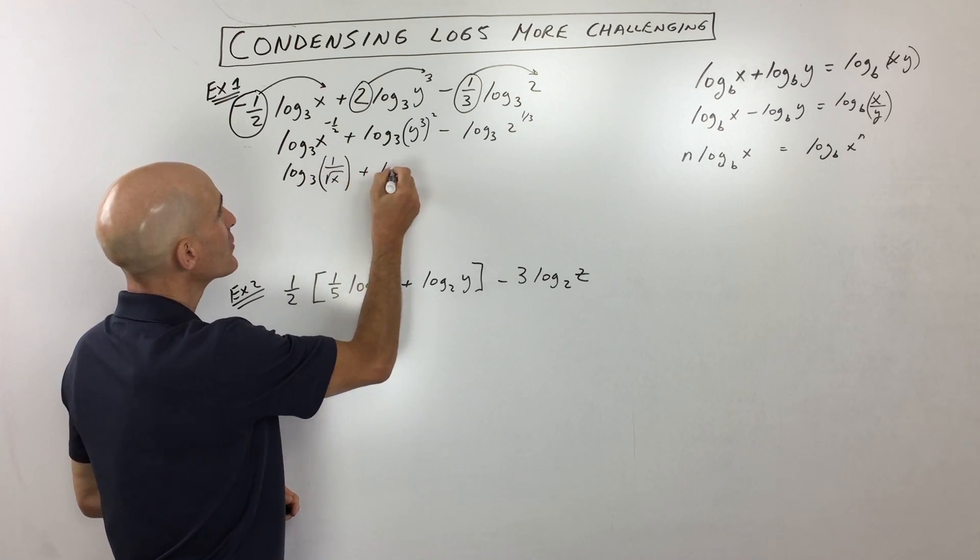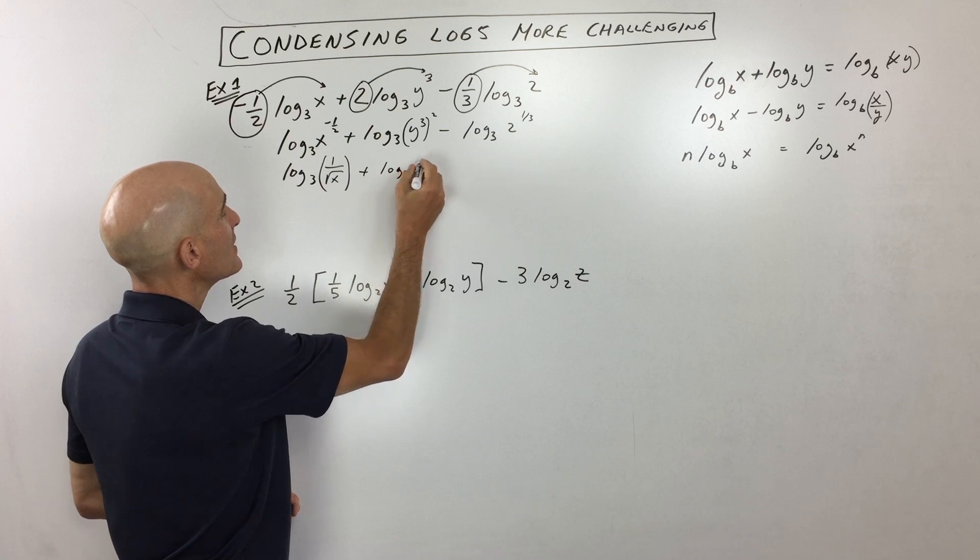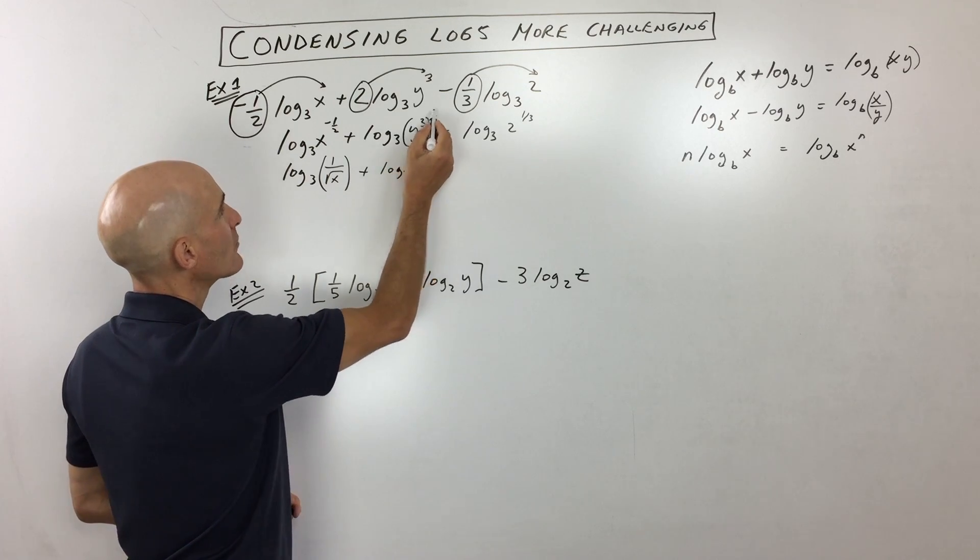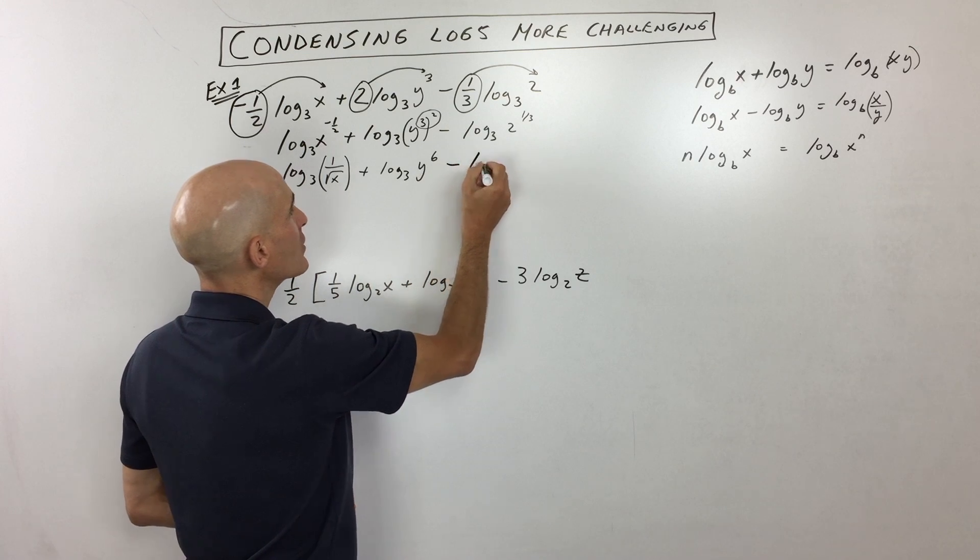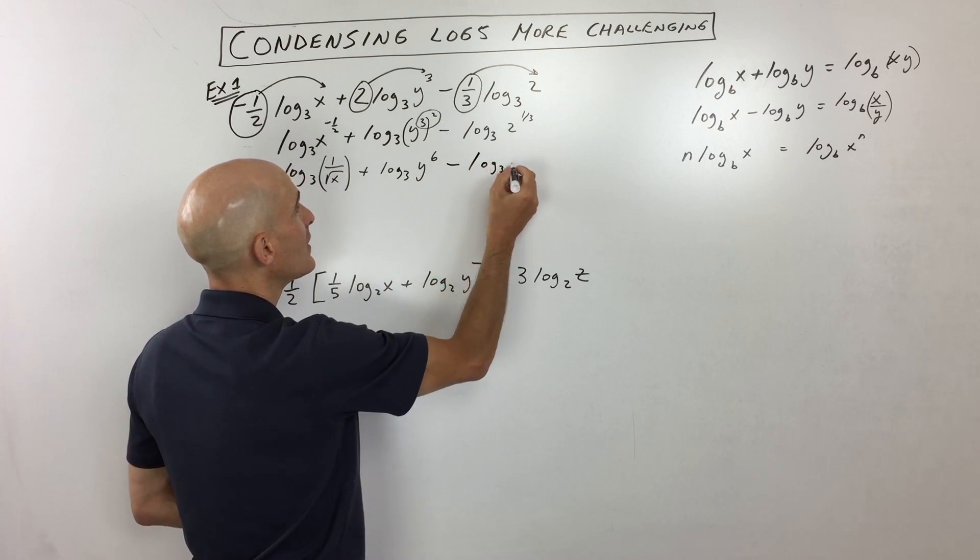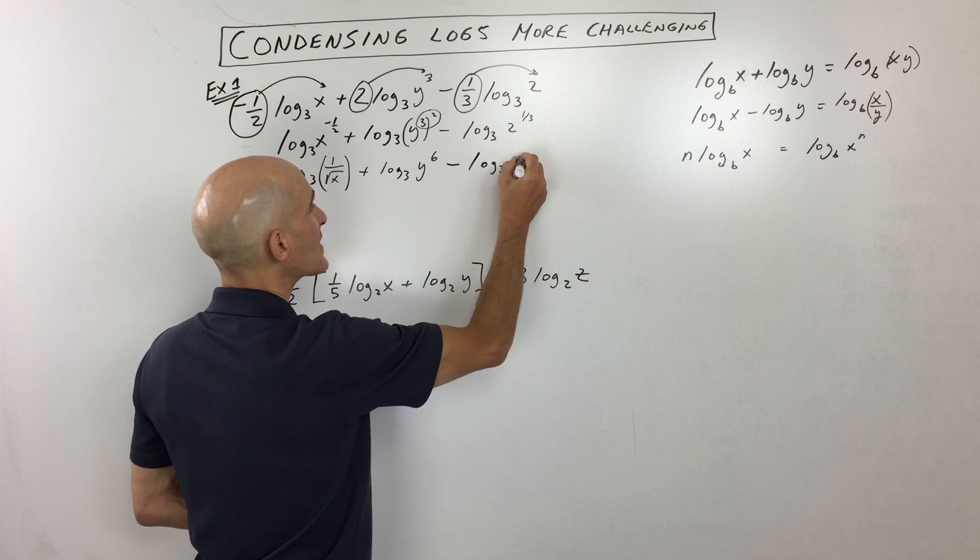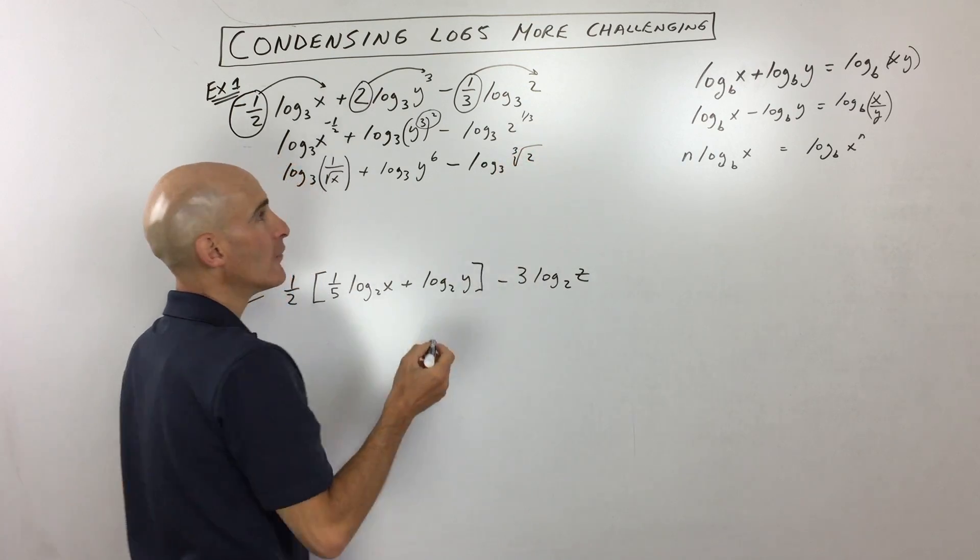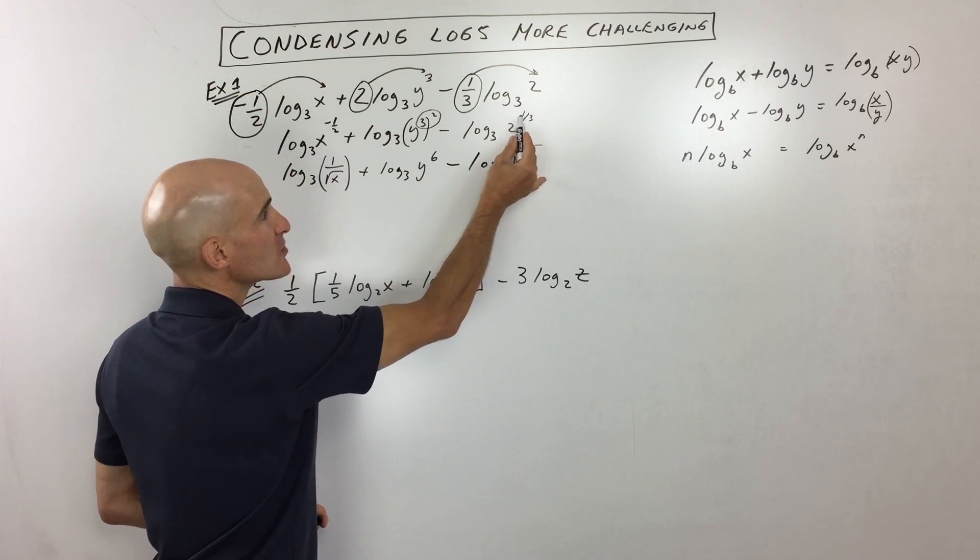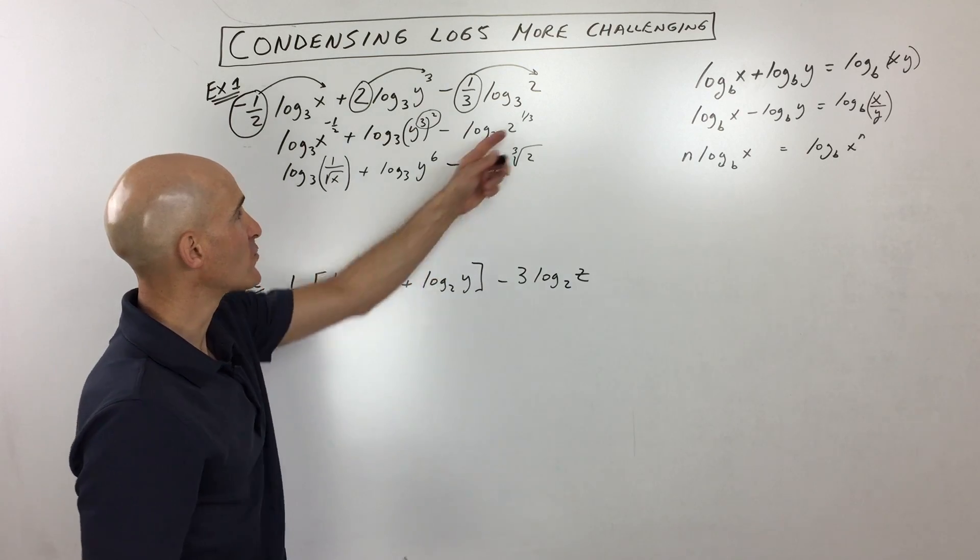This one over here, log base 3 of y to the 6th power, because remember power to power you multiply, and then over here we have log base 3, and then the 1 third power is actually the cube root of 2. So remember the denominator is the root, and the numerator is the power, with these rational exponents.